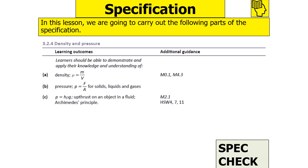We're going to look at the following part of the OCR A-level physics specification: 3.2.4, density and pressure, and look at the idea that learners should be able to demonstrate and apply their knowledge and understanding of pressure, with pressure equals force over area for solids, liquids and gases.